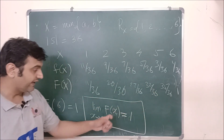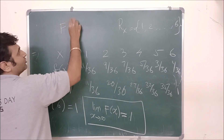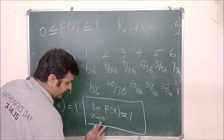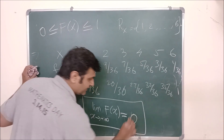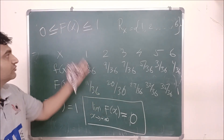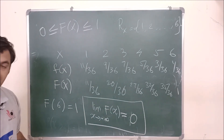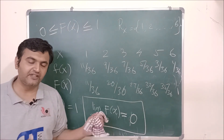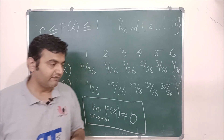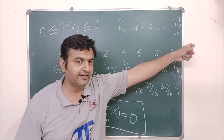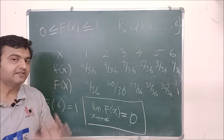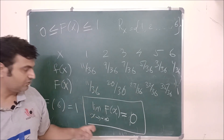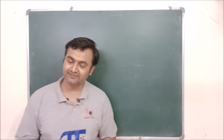The range of F(x) is always [0, 1] — it is always between 0 and 1. Correspondingly, the limit of F(x) as x → −∞ is 0, because for values outside the range set (like negative numbers or values above 6), F(x) is defined to be 0. So as x goes toward minus infinity, the CDF approaches 0. Keep these limit properties in mind. If you have any doubts, feel free to ask in the comment section. Thank you.